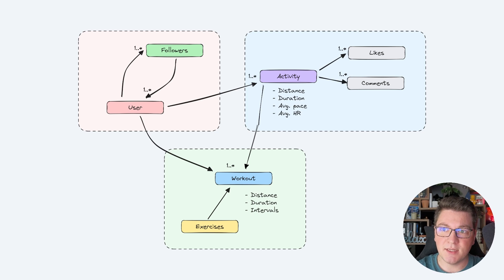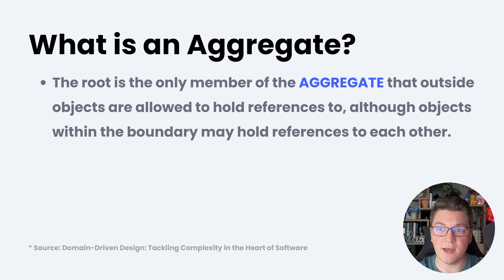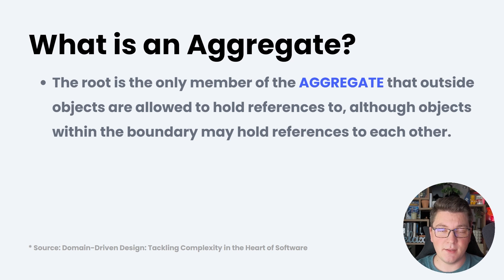An important rule is that the aggregate root is the only member of the aggregate that should be visible from the outside. From outside the aggregate, we can only reference the aggregate root and use it to communicate with the other objects inside. However, from inside the aggregate, objects are allowed to hold references to each other.